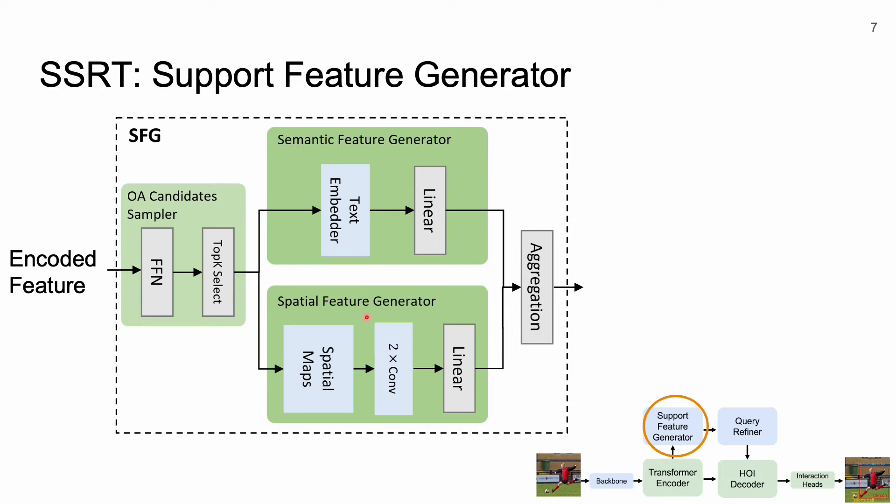Similarly, every candidate is converted to a spatial support feature via the spatial support feature generator. Every object-action is connected to a two-channel spatial map which is estimated for every candidate from the training dataset. At the end, these support features are aggregated via element-wise multiplication.